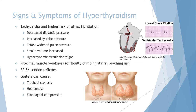Goiters can also cause, as a physical barrier, tracheal stenosis as they compress the airway, hoarseness as they start affecting the recurrent laryngeal nerve of the vagus nerve, and esophageal compression, as the esophagus goes right behind the airway. So both tubes can be affected by goiter.